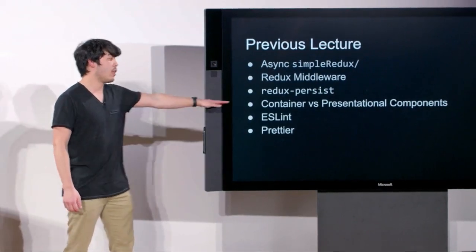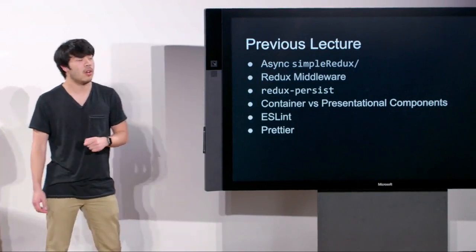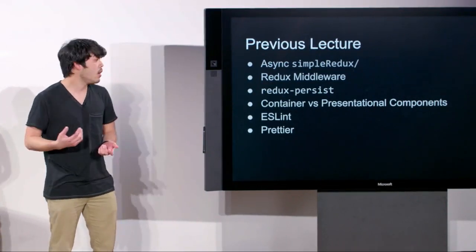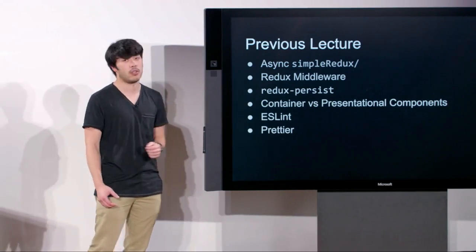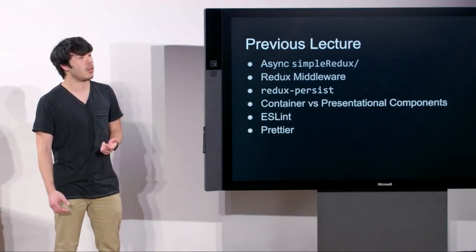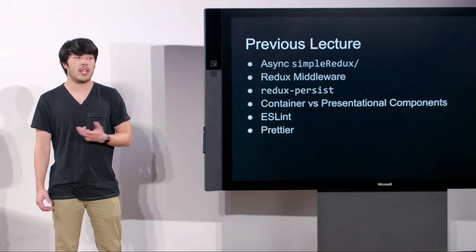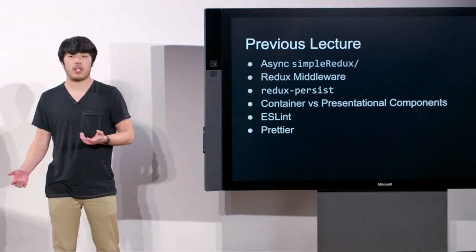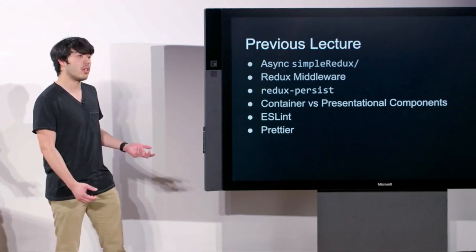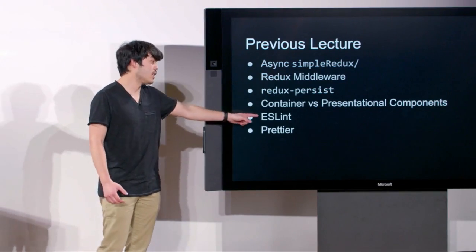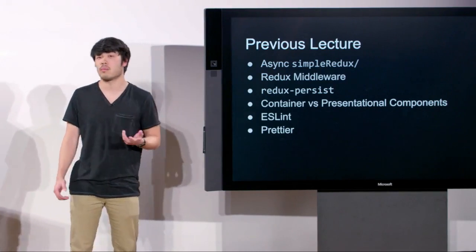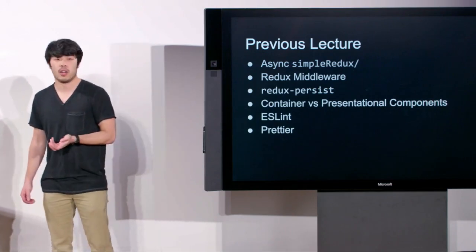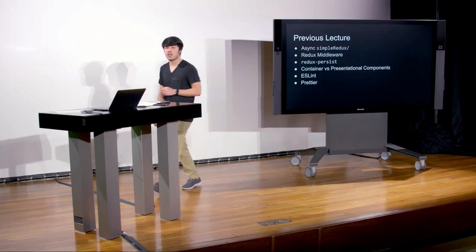We then talked about the difference between container and presentational components. Container components are the ones hooked up to your Redux state, and they pass down props to presentational components, which only care about the props they need to display themselves. We also talked about two tools for writing JavaScript: ESLint, which enforces style rules, and Prettier, which automatically rewrites files to abide by those rules.